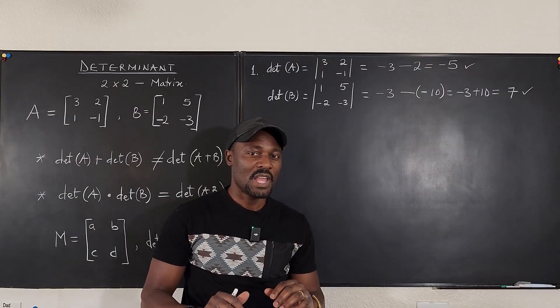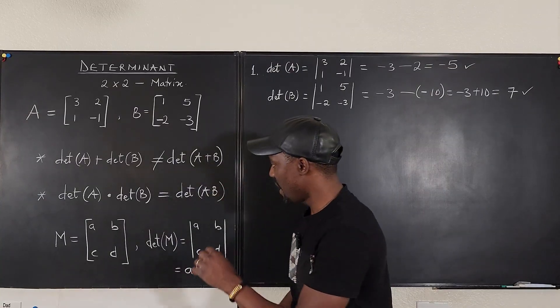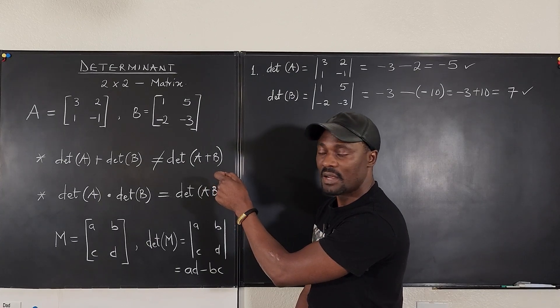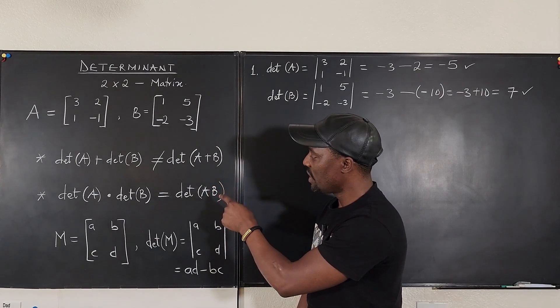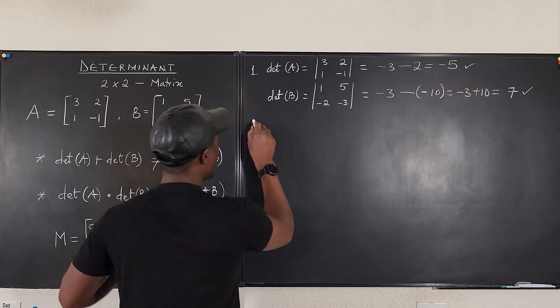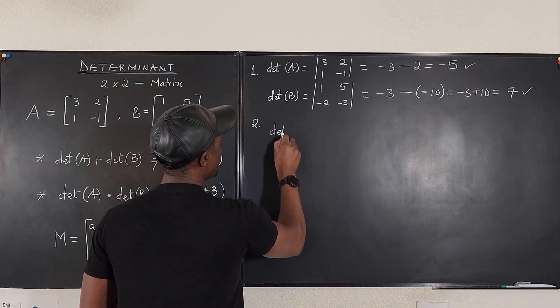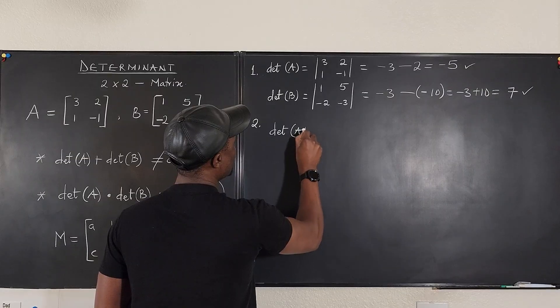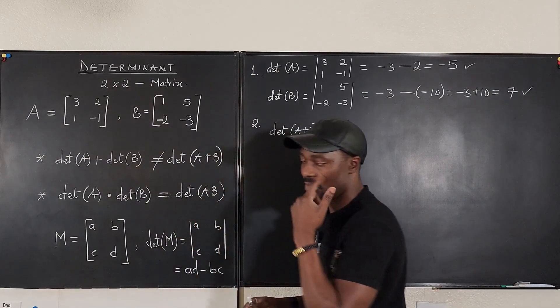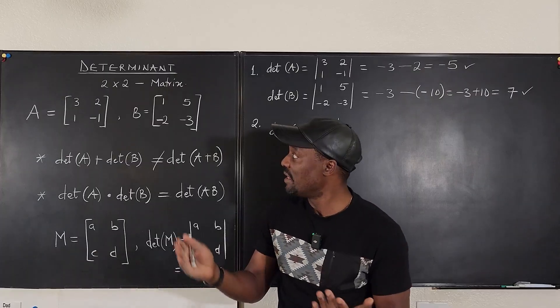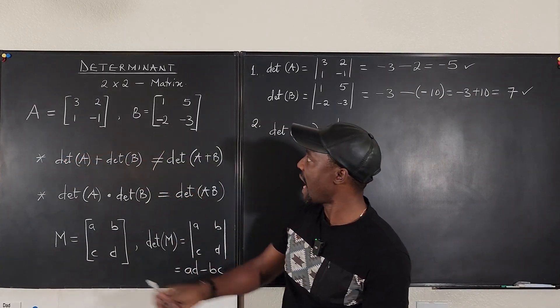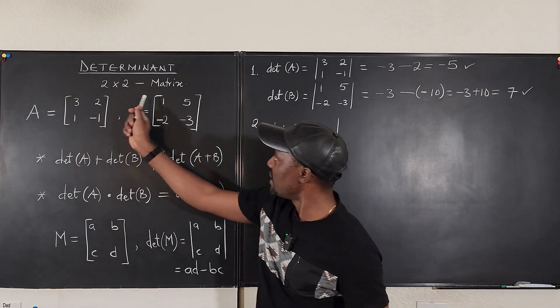So now, why don't we try and verify this claim that I made, that if you add the two matrices together, the determinant of it will not give you the same thing. I'm just going to do the work. So number two, what is the determinant of A plus B? Well, now what is A plus B? Remember when you're adding matrices, the matrices just have to have the same dimensions, 2 by 2 plus 2 by 2. So I'm going to add the corresponding entries...